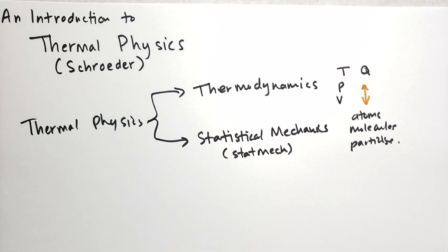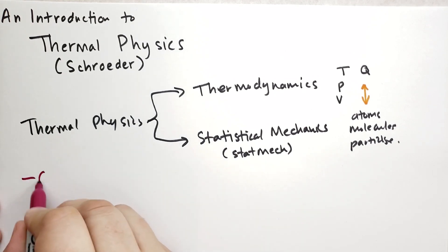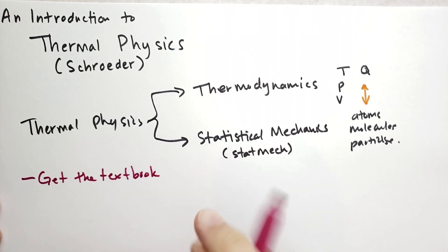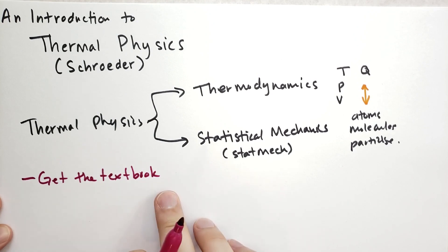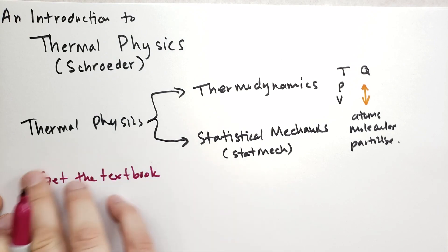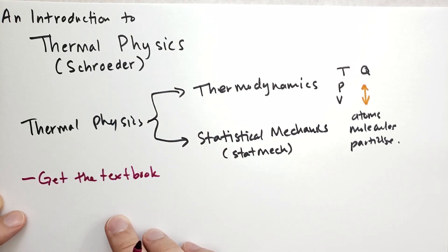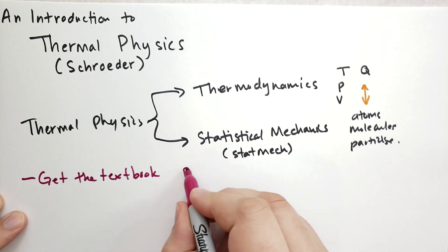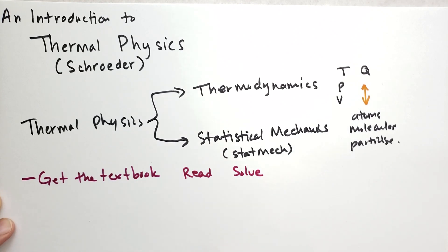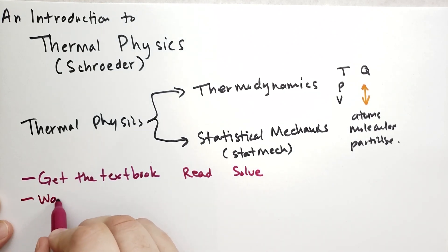If you're trying to learn physics and you're on the internet actually trying to do it, the first thing you need to do is get the textbook. I have a link in the description — it's an Amazon affiliate link, so I'll get a few bucks if you buy through that link. You can also find other ways to get the textbook, but I don't know how you can study a topic like this without it. You're going to read it and solve the problems on your own. You can also watch my videos.